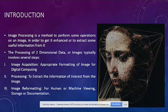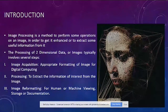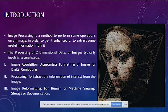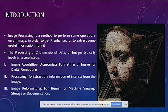Basically it involves processing of two-dimensional data — the image — and it involves processes such as image acquisition, further processing, then image reformatting, where we accept the image in an appropriate format for digital computing. Then the useful extraction of information happens using algorithms, and then we reformat it for human or machine reading, storage or documentation.